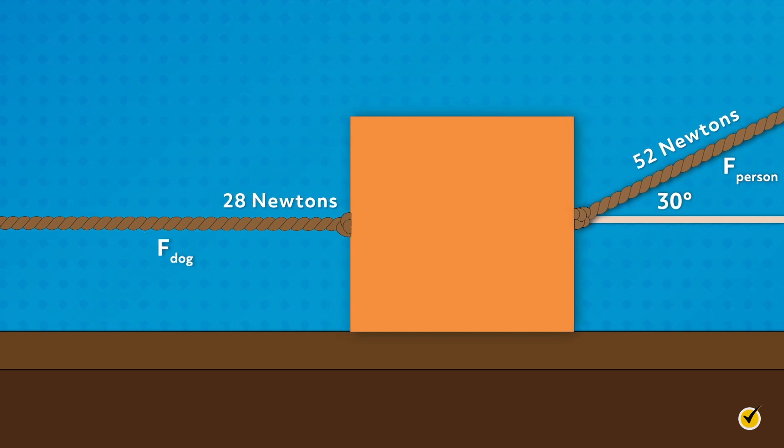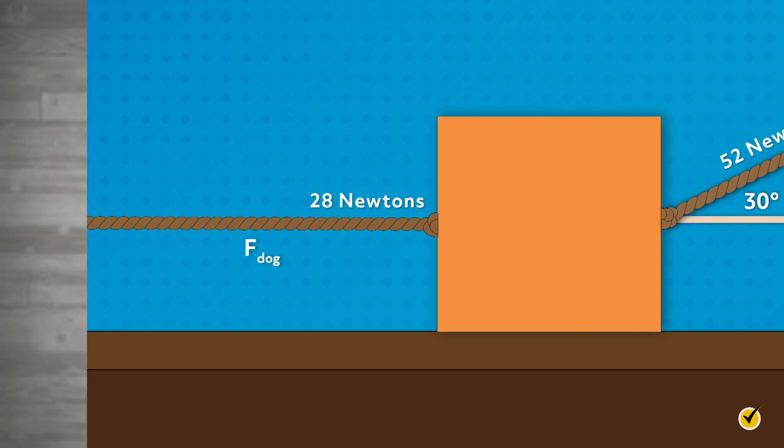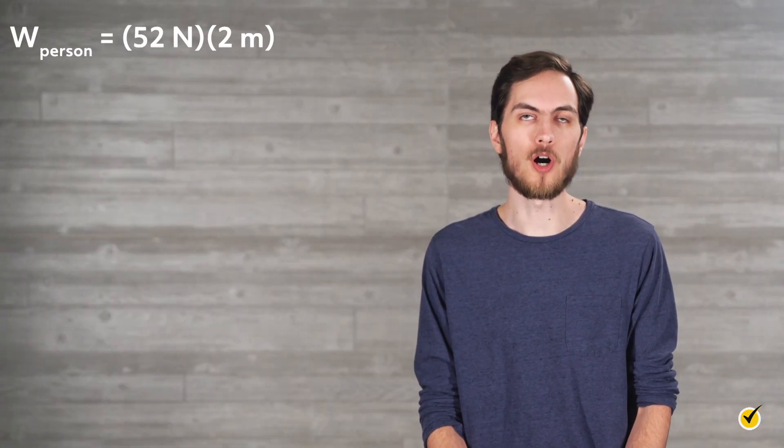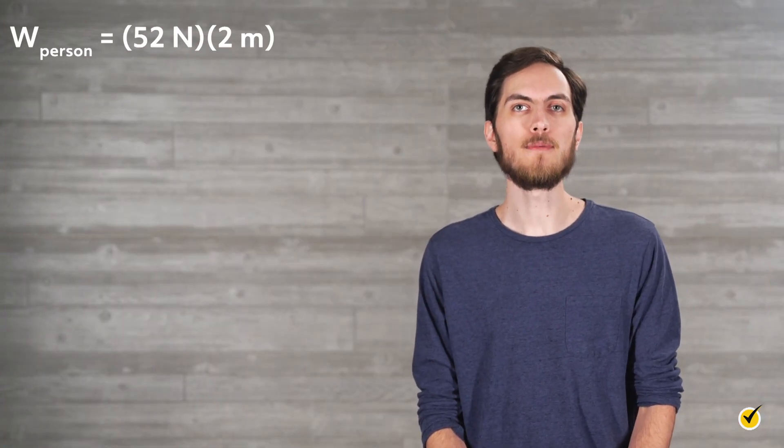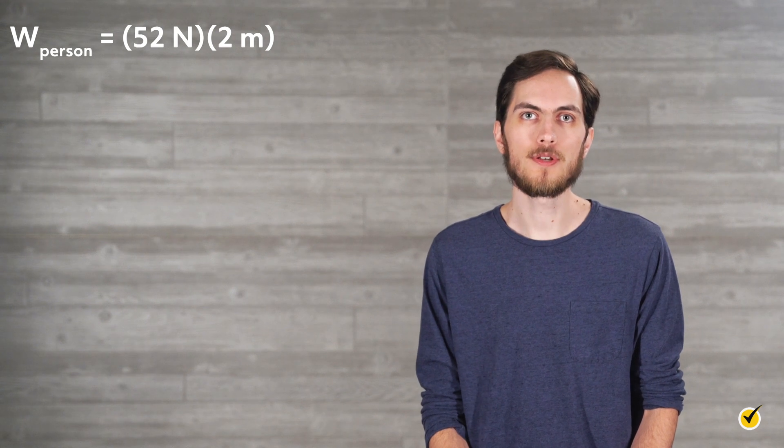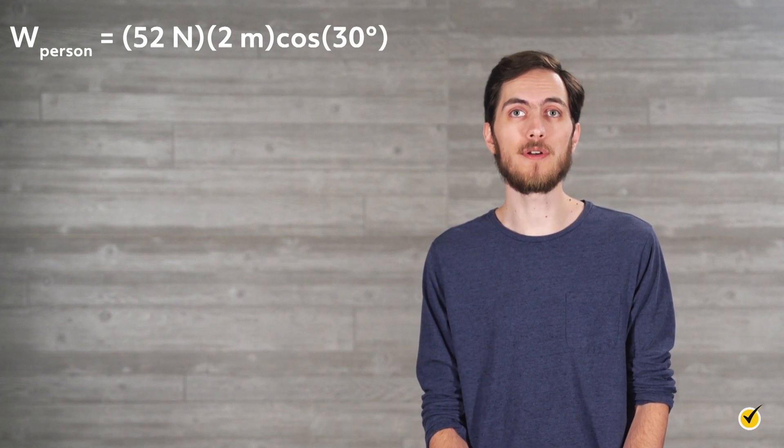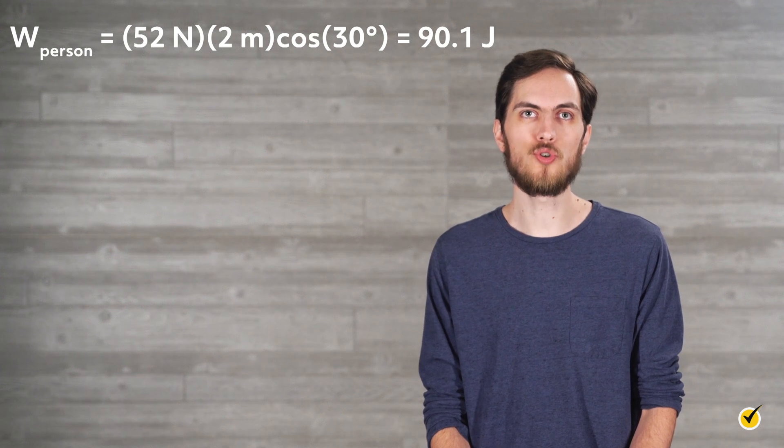So how do we go about finding the net work in this scenario? First, let's find the work that the person has done over the 2 meters. If we multiply the newtons times the meters, then multiply that times the cosine of 30 degrees, we get 90.1 joules.